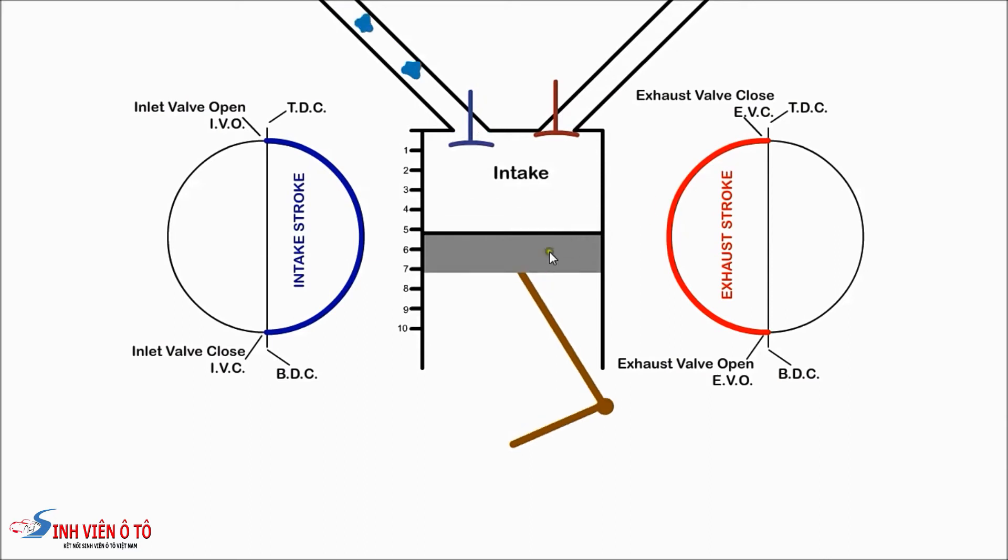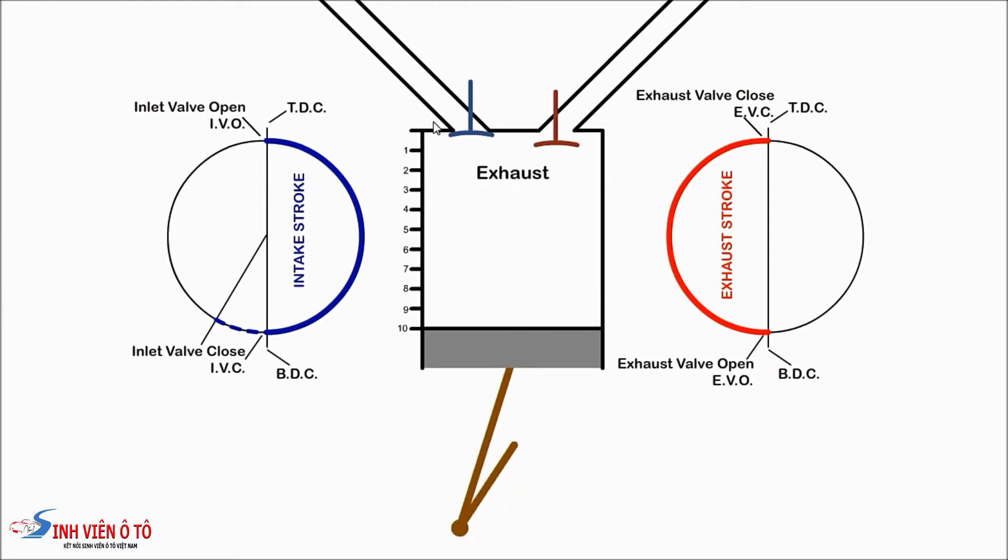If we look at the inlet valve closing at BDC, we see that a flow of air is blocked behind the valve from entering the cylinder. It would be much better to delay closing the valve until the increasing cylinder pressure stops the flow, then we get more air into the cylinder.